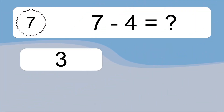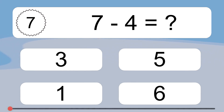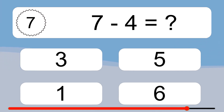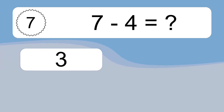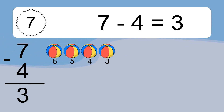7 minus 4 equals what? 7 minus 4 equals 3. Let's count it: 6, 5, 4, 3.